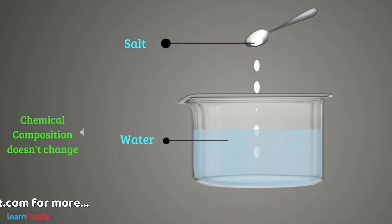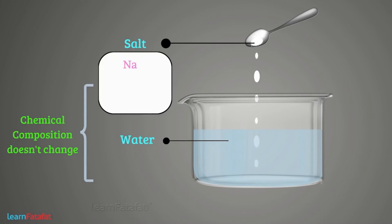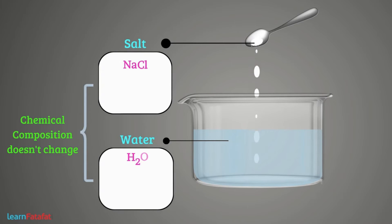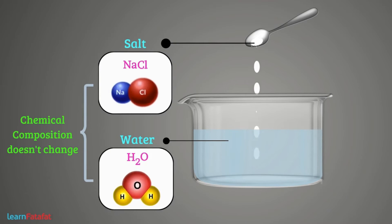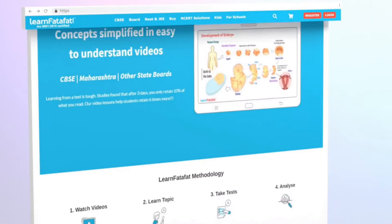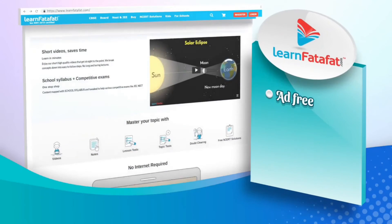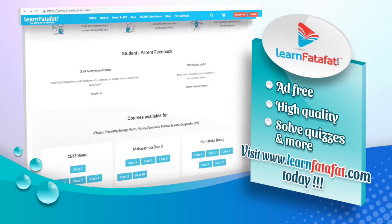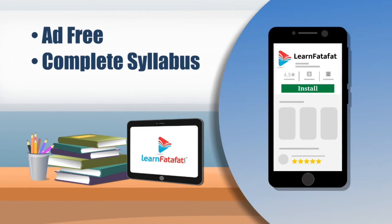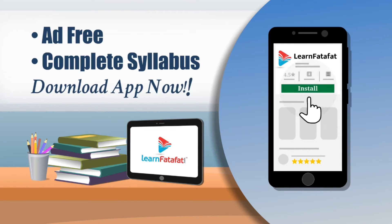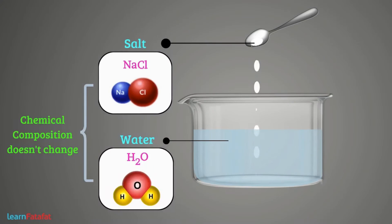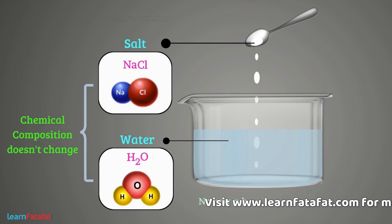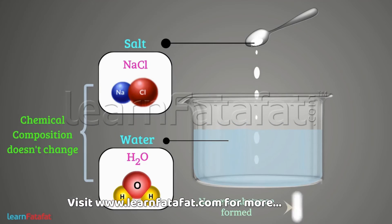By the term chemical composition, we mean elements such as sodium, chlorine, hydrogen, oxygen, etc., and their amount in the basic structure of the substance. If chemical composition is not changing, then this indicates that no new substance is formed, and thus confirms a physical change.